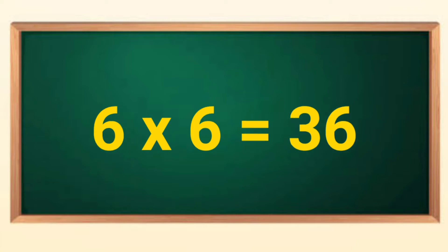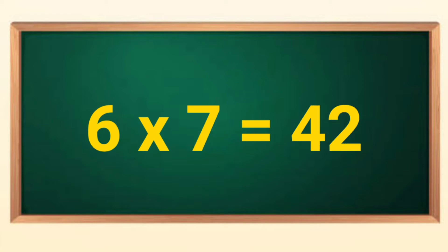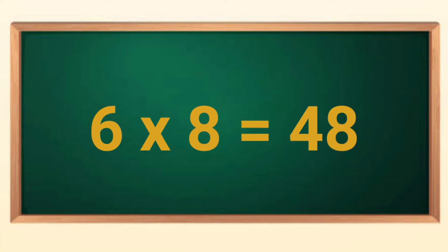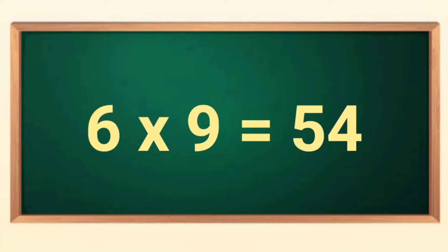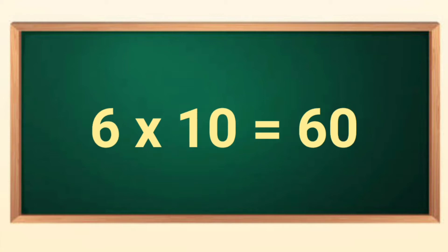Six sixes are thirty-six. Six sevens are forty-two. Six eights are forty-eight. Six nines are fifty-four. Six tens are sixty.